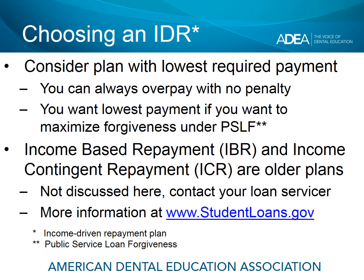When choosing an income-driven repayment plan, or IDR, while we're not trying to encourage you to always make the lowest possible payment, we would suggest that if you are going to use an IDR, you consider the one with the lowest required payment. You can always overpay with no penalty, so getting into a plan with the lowest required payment helps your cash flow. And if you are trying to qualify for the Public Service Loan Forgiveness Program, it's to your benefit to have the lowest possible payment each month, because that will help you maximize the forgiveness amount.